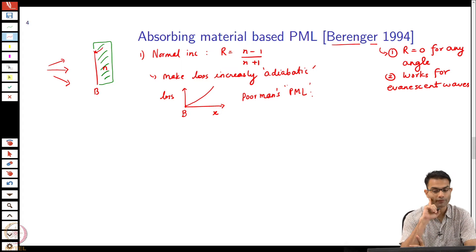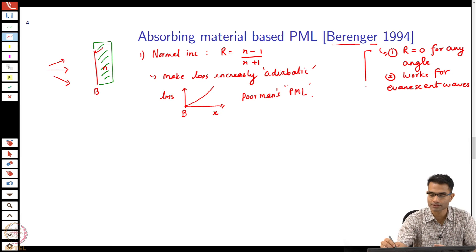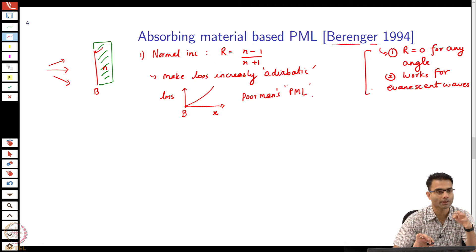This is one reasonable way of implementing, getting around the fact that all angles have some reflection. Now, we have arrived at the fact that I need some special kind of loss in order to satisfy my wish list. If I tell you that the PML is a special kind of absorbing material, you can see the motivation. We have already come across, just by simple common sense, one kind of absorber in which the loss increases gradually.